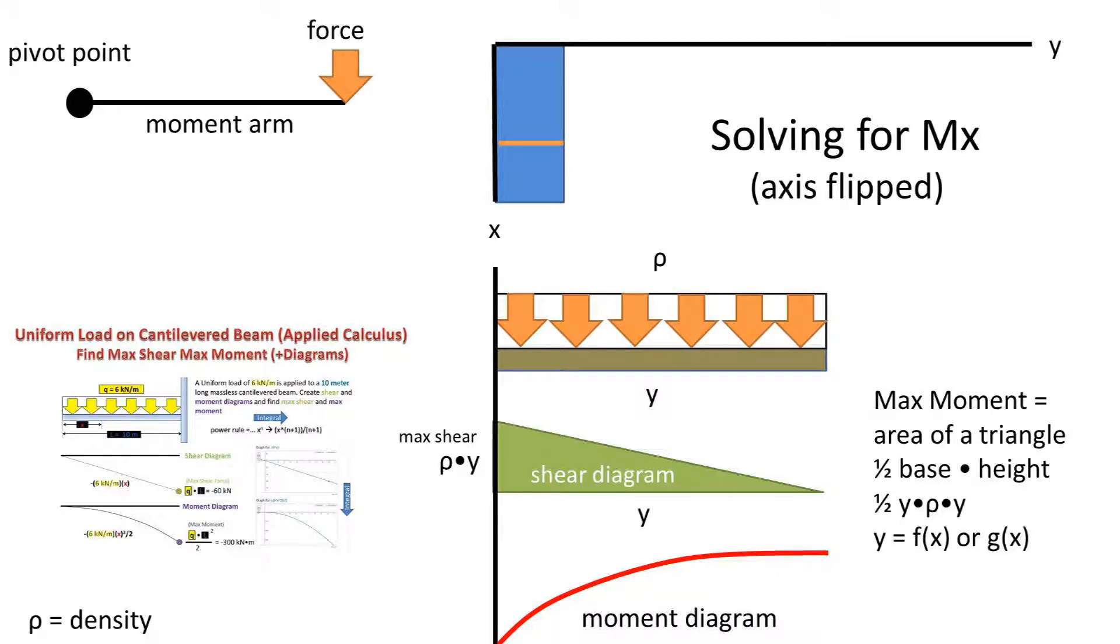Now recall that y on a graph is found by taking the function and plugging in the x-axis value at that point. So we can plug in f(x) into the area of a triangle equation.